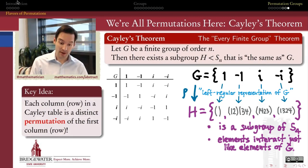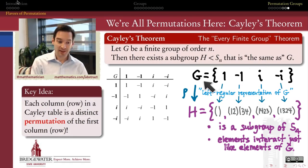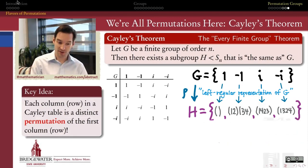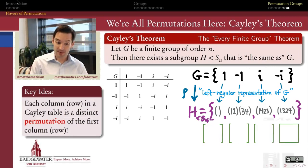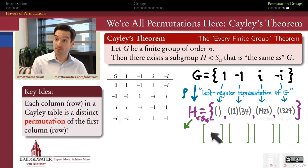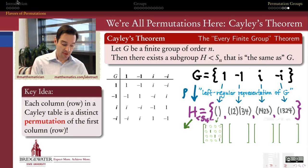If I understand permutations well enough, I can locate any finite group inside of a permutation group and understand it better. We also get out of this, for free, a way of representing elements of a group by matrices, because we know how to represent permutations by matrix multiplication, as we saw a few videos ago. So I want to close by doing that. If I represent each one of these permutations by a permutation matrix — a row-swapped version of a 4×4 identity matrix — then that will indicate that I can also use these matrices to represent the elements of my original group G.